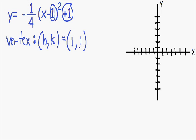Now I'll plot the vertex at positive one, positive one on the graph. Going over one and up one — here is our vertex at (1, 1). Now that the vertex is plotted, we need a few more points to draw an accurate graph. I like to pick one point to the right of the vertex and one to the left. Since the vertex has x value of one, any number greater than one is to the right. I'll pick x equals three because that will give a nice y value.